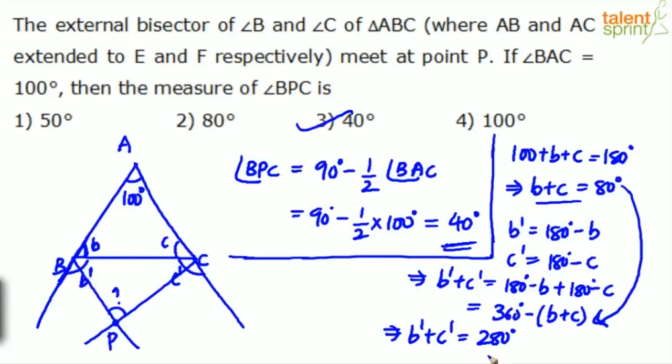Now, the point is complete B dash plus complete C dash is equal to 280. If you look at this angle, this is B dash by 2 and this angle is C dash by 2. Why? These are angular bisectors. So we can now conclude that B dash plus C dash by 2 is equal to 280 by 2, which is 140 degrees. B dash by 2 plus C dash by 2, 140. So sum of these two is 140.